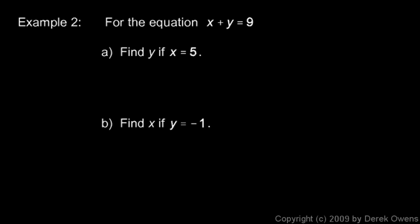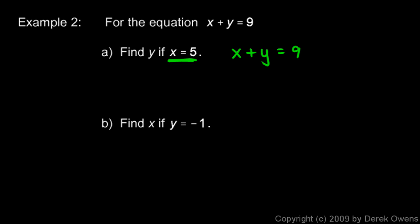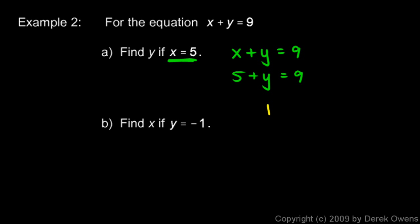Example 2: for the equation x plus y equals 9, find y if x equals 5. I'll write the equation x plus y equals 9, then rewrite it using 5 in place of x: 5 plus y equals 9. Think of a number for y that makes this true — 5 plus 4 equals 9, so y must be 4. If x is 5, then y equals 4.